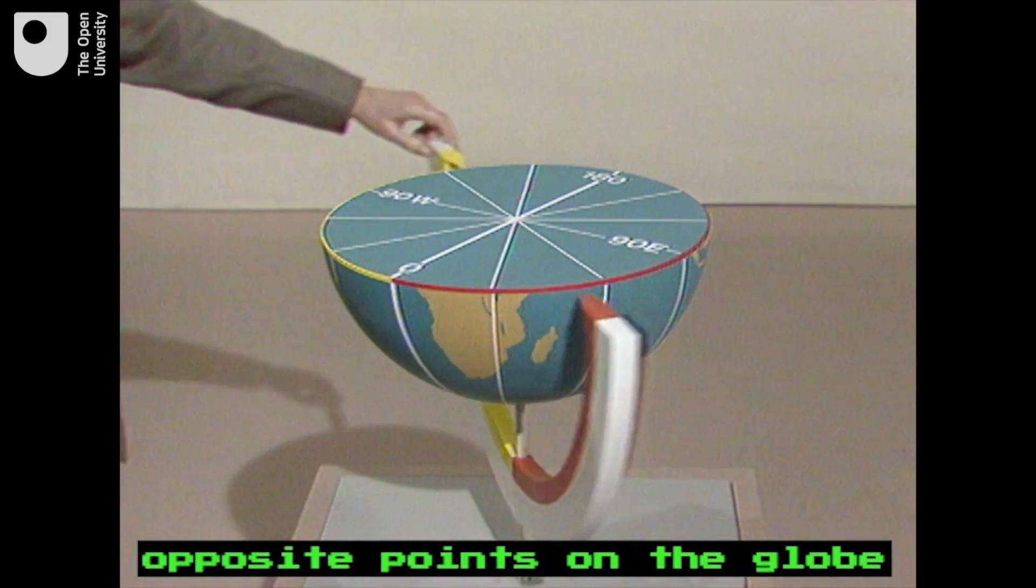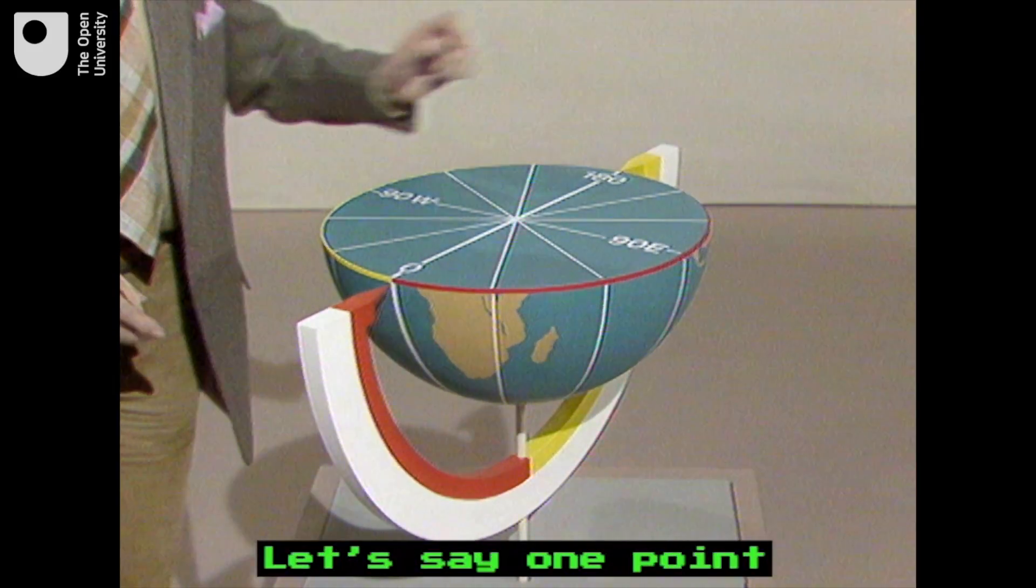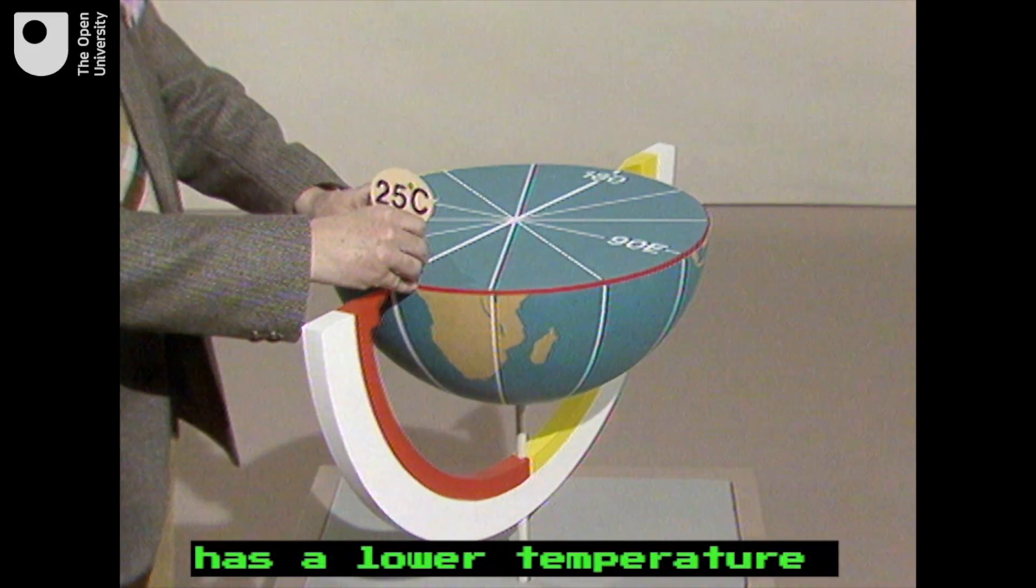Now, take any pair of opposite points on the globe. Let's say one point has a lower temperature than the other.